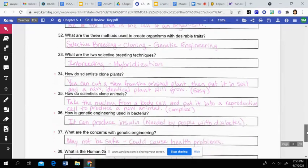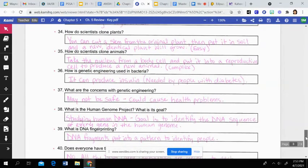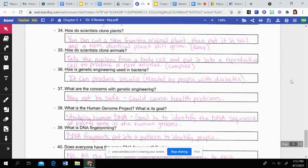Then the last questions here, 34 through 40, are all from your textbook. So you may have had to go back through your textbook, or you can look through notes or answer these on your own. But scientists clone plants by simply cutting a stem or a piece of a twig or something off of the original plant. Then you put it in soil so that it can root and regrow, and then a new identical plant will grow. So that's an easy process. Then with animals, it's more complex than this description.